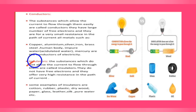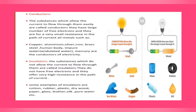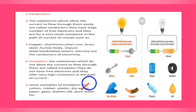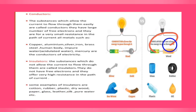Insulators are substances which do not allow current to flow through them. They do not have free electrons and they offer very high resistance in the path of the current. Examples of insulators are cotton, rubber, plastic, dry wood, paper, glass, leather, silk, pure water, and oil. Note: dry wood is an insulator, but wet wood may behave like a conductor because it contains water.